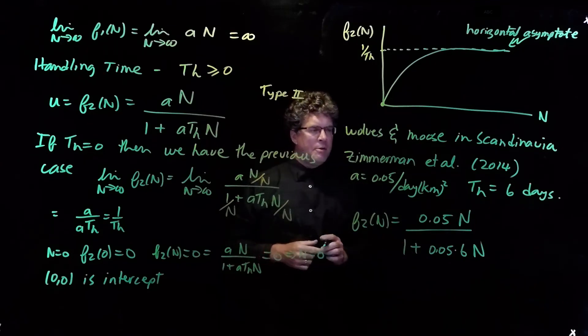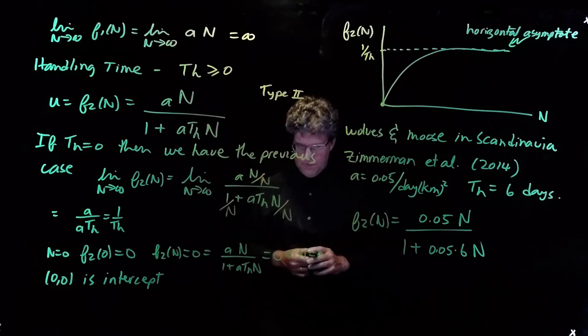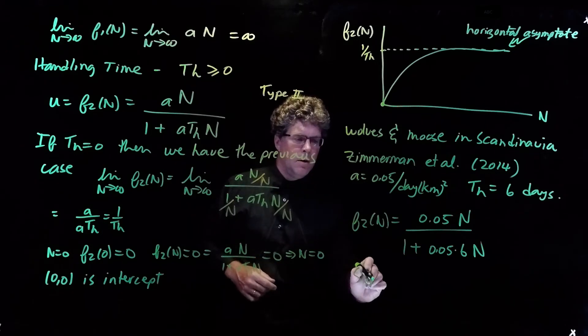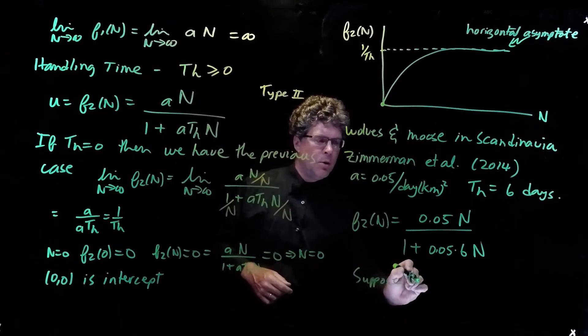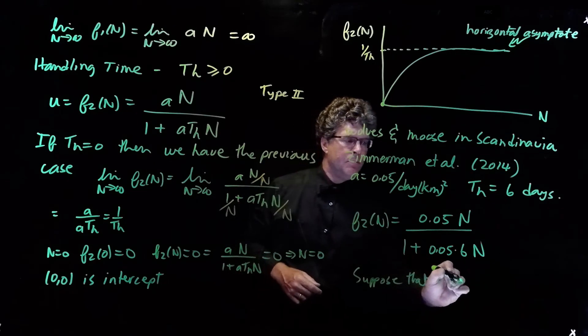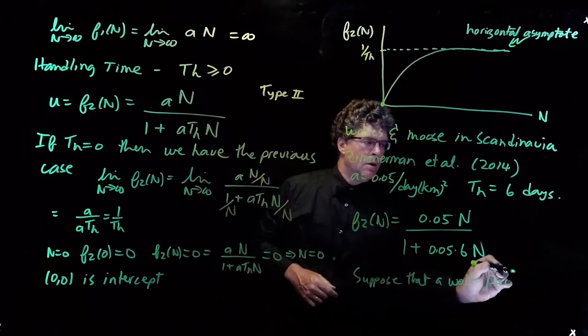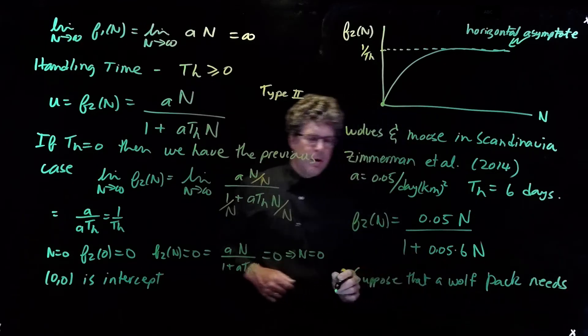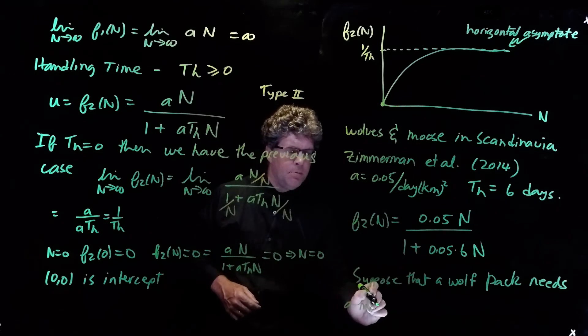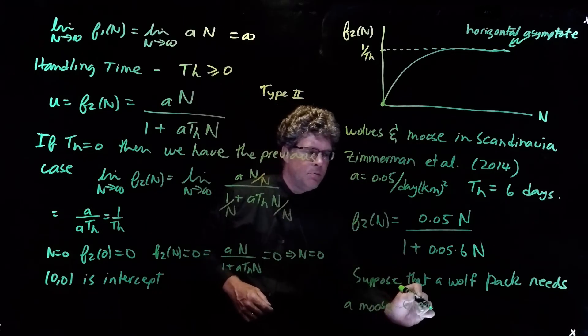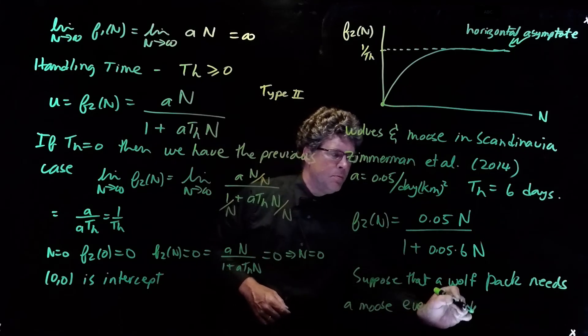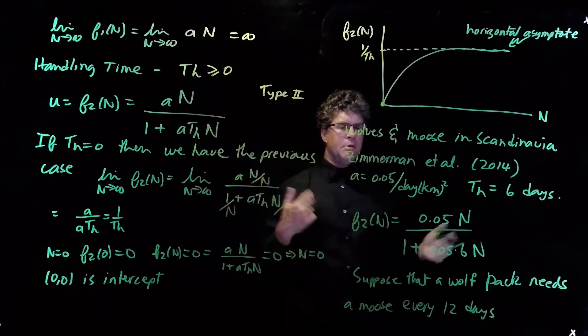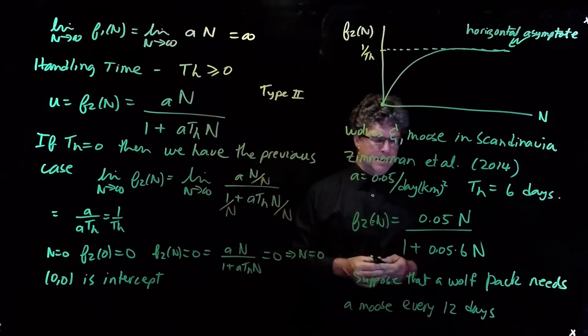Okay. So, with this function, we can ask the following question. Suppose that a wolf pack needs to feed on a moose about every 12 days. Then, what would the density of moose be needed so as to feed a wolf pack? Okay.